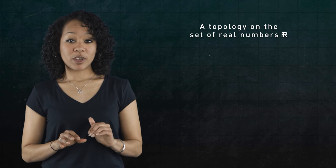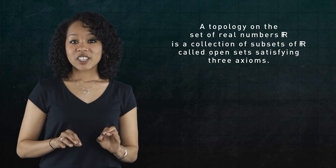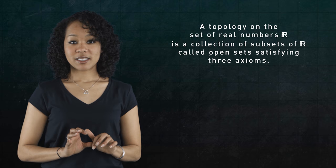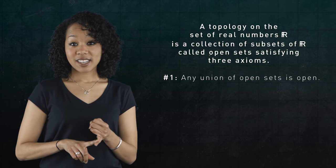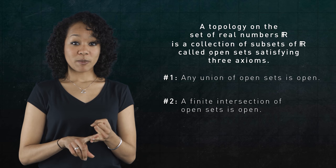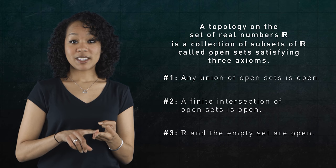A topology on the set of real numbers R is a collection of subsets called open sets that satisfy three axioms. Any union of open sets is open. The intersection of finitely many open sets is open. And R and the empty set are open.